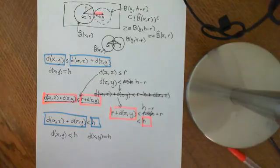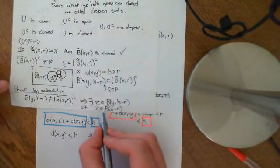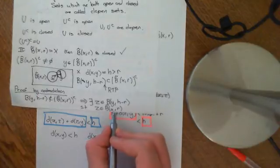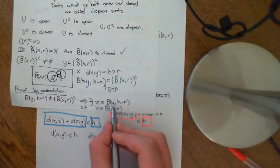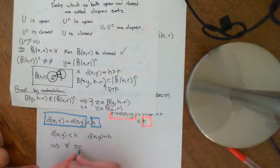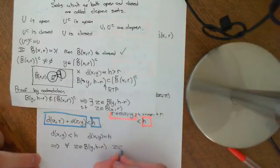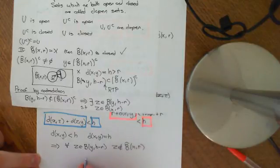So we have reached a contradiction. Therefore, there could not have existed a point z which was an element of both the closed ball centred at x of radius r, and this open ball centred at y of radius h minus r. This implies that for all z that is an element of the open ball centred at y of radius h minus r, z is not an element of the closed ball centred at x of radius r.